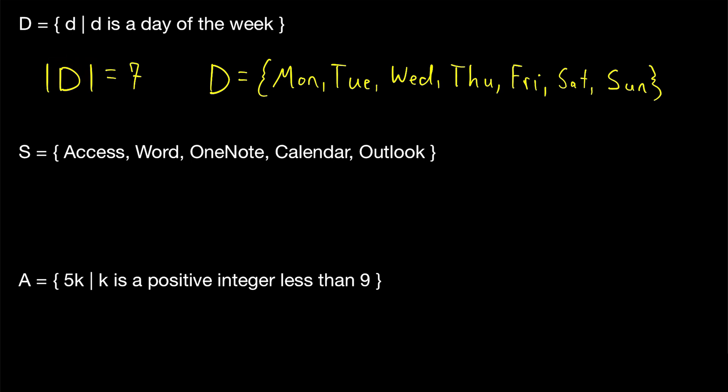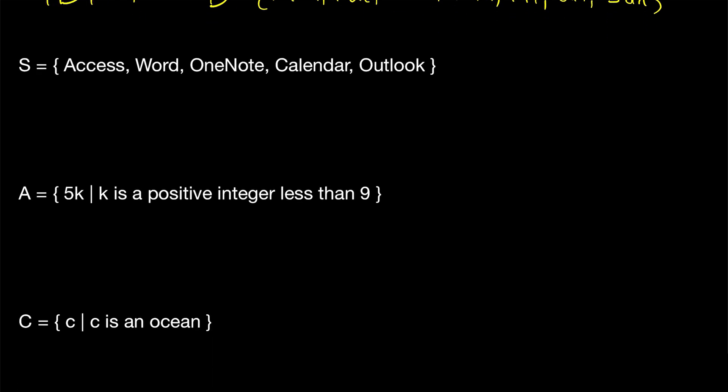The cardinality of a set is the number of elements it contains. The set D, by definition, in this set builder notation, contains the days of the week. There are seven days of the week. So the cardinality of D is equal to seven. All right, on to the next example.